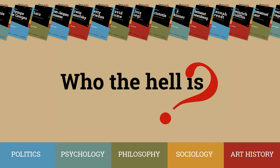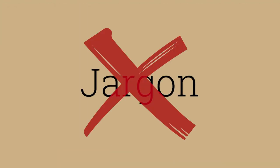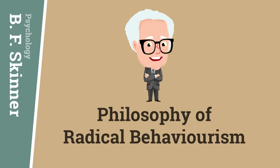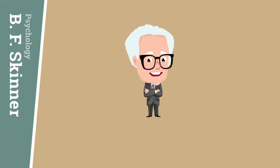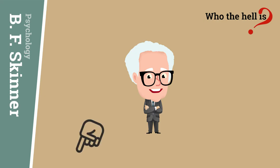Who the Hell Is? is a new book series on the world's greatest thinkers, presenting their ideas in an accessible, engaging and jargon-free way. Today we're going to be talking about the psychologist B.F. Skinner's philosophy of Radical Behaviourism. But first we will introduce Skinner, look at what behaviourism is, and explain the practices used by behaviourists to understand learning processes. If you'd like to go to any area directly, please use the chapters in the timeline.